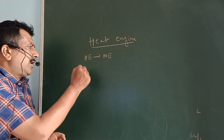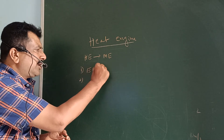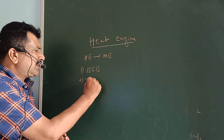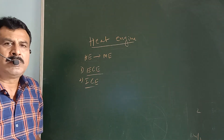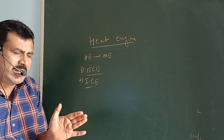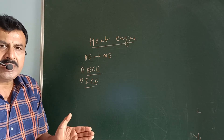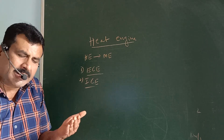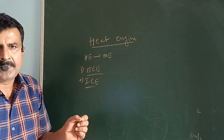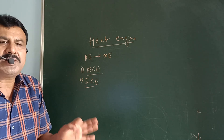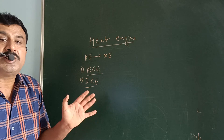Mainly there are two types of heat engines. One is external combustion engine and the other is internal combustion engine. The engine in which heat is applied to the cylinder from outside, or in which combustion takes place outside the engine, is called an external combustion engine.